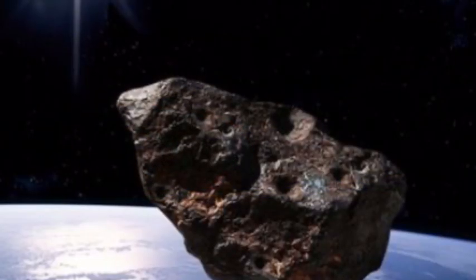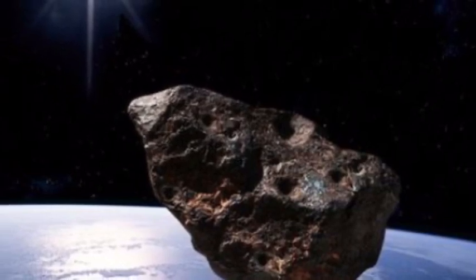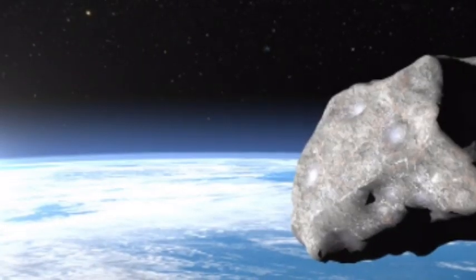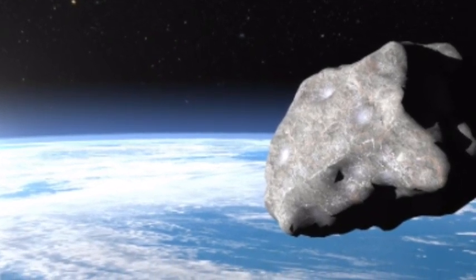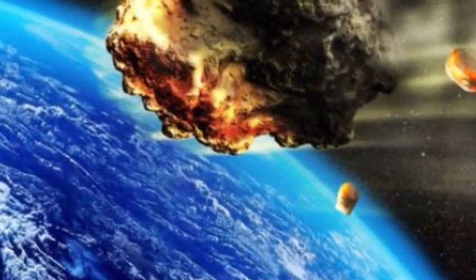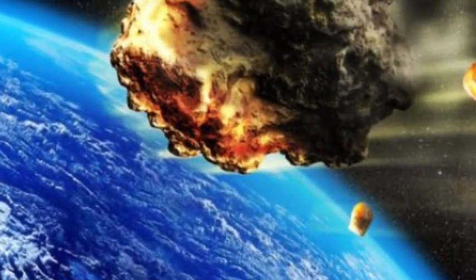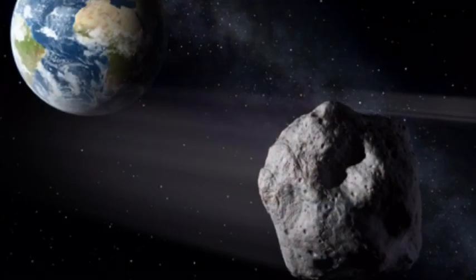NASA is expecting this asteroid FK5 to make an appearance around 11:56 BST time, and this will happen at a speed around 10.48 kilometers per second, which is pretty fast. And what they know about it is that it's